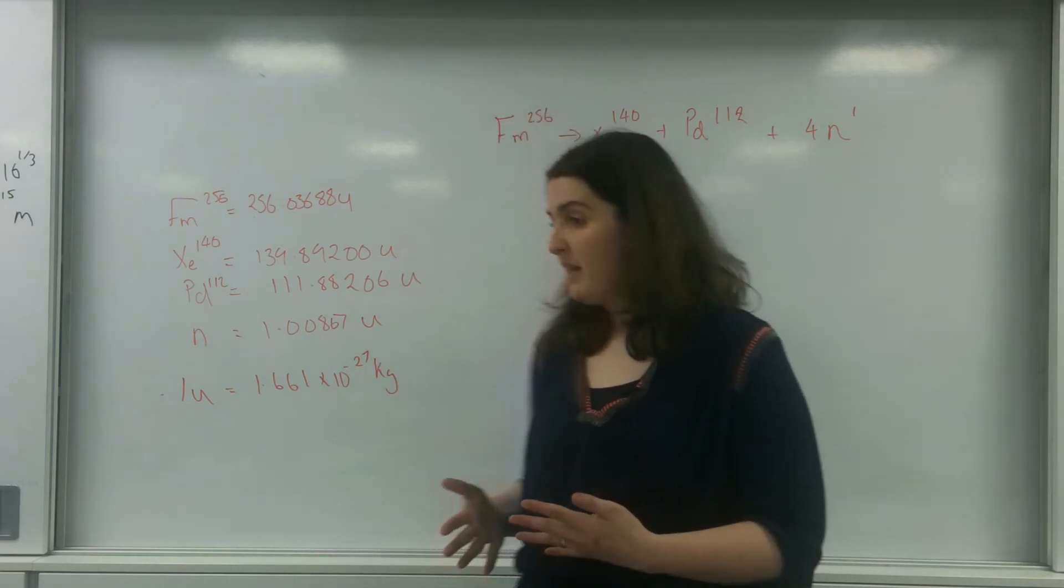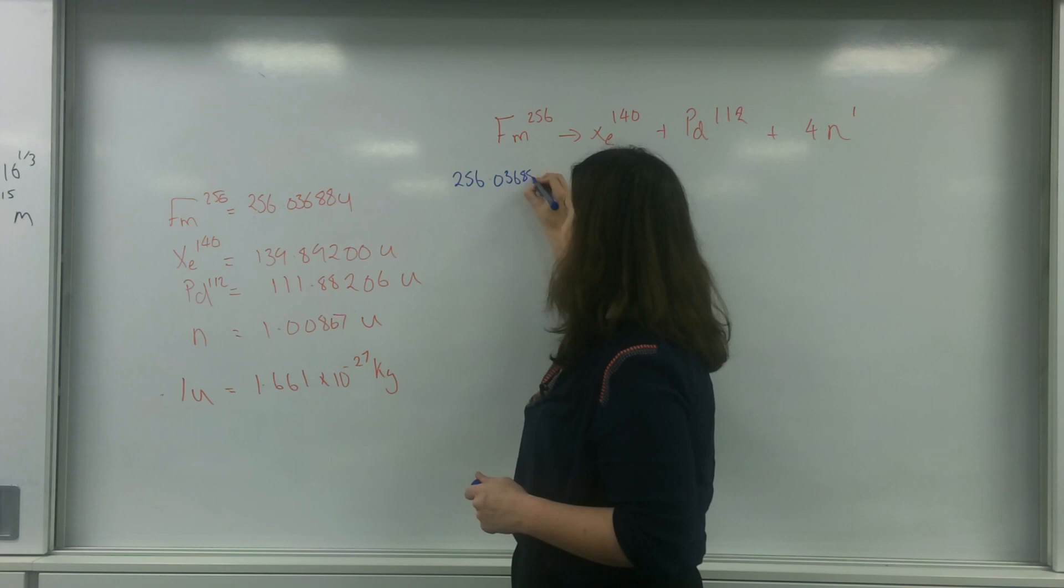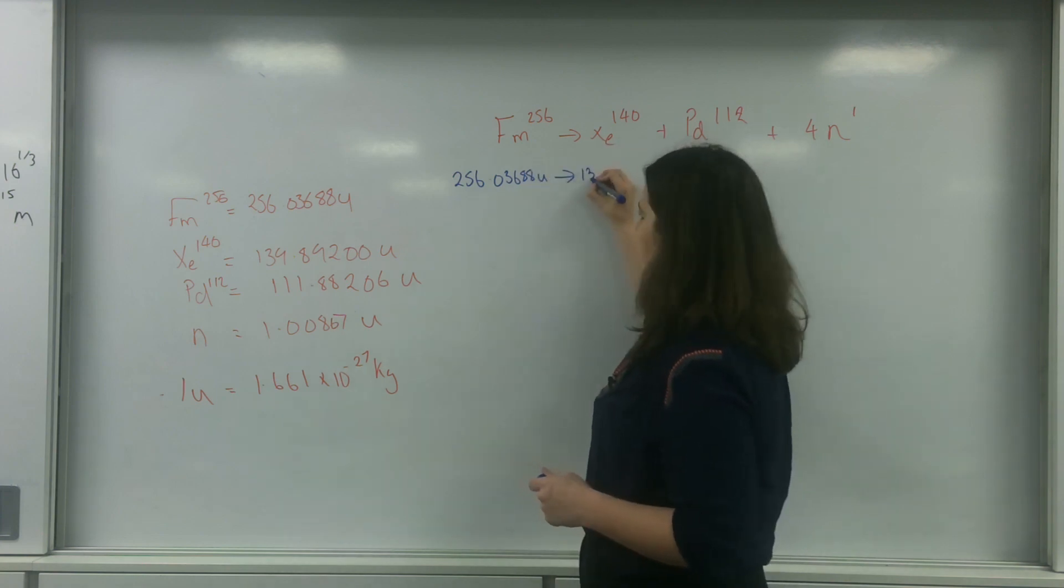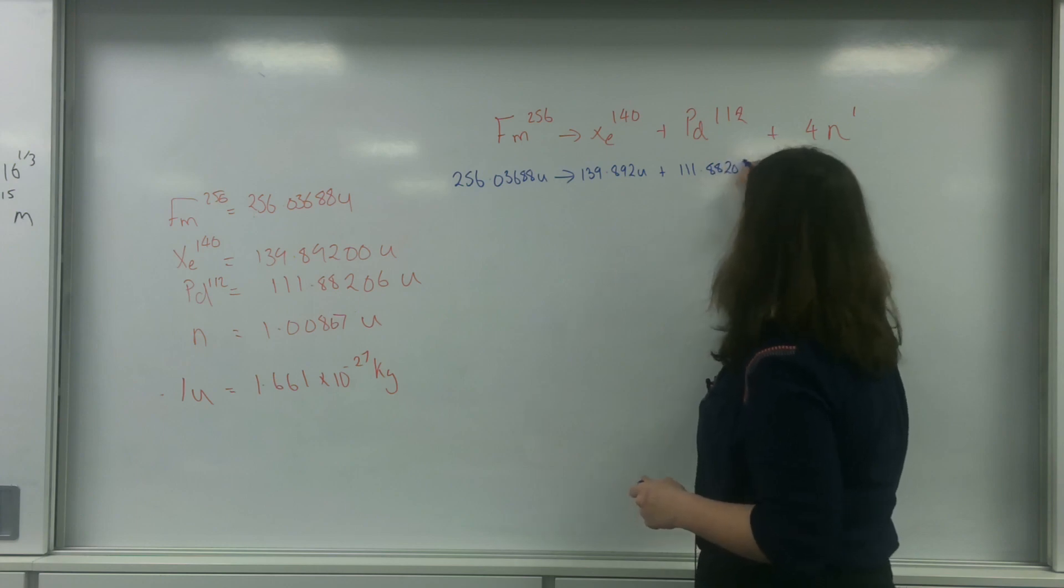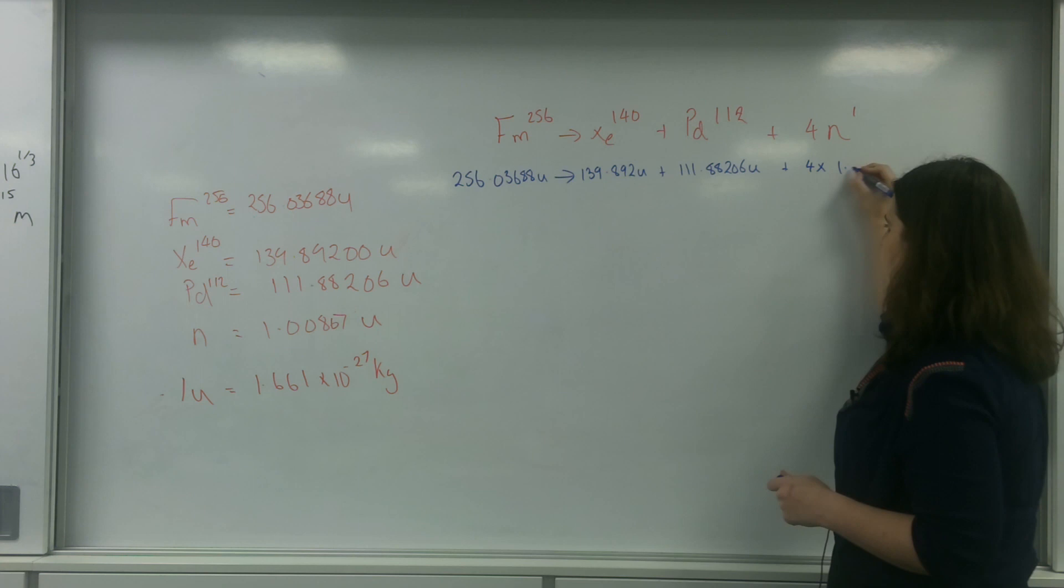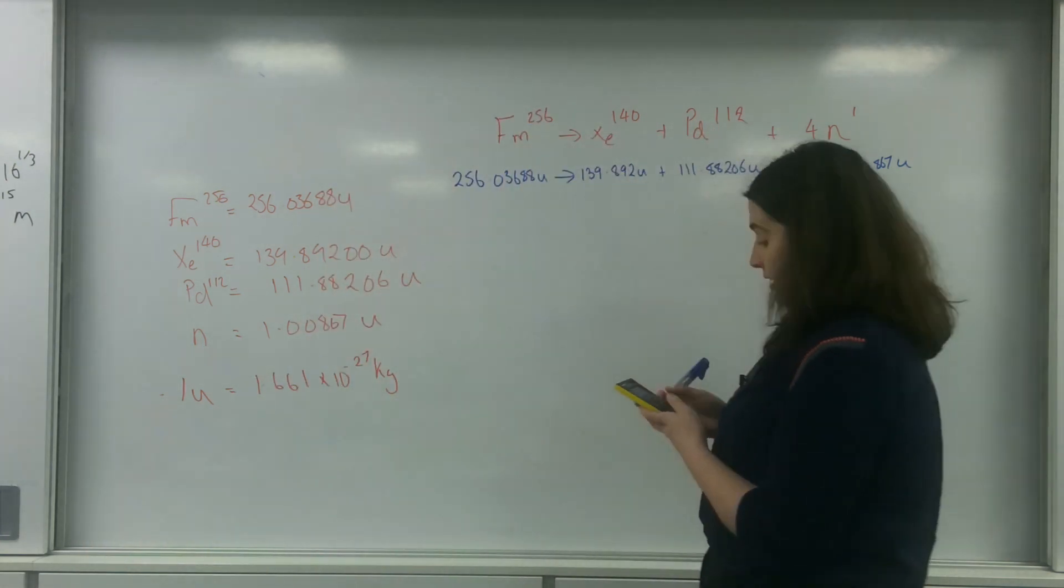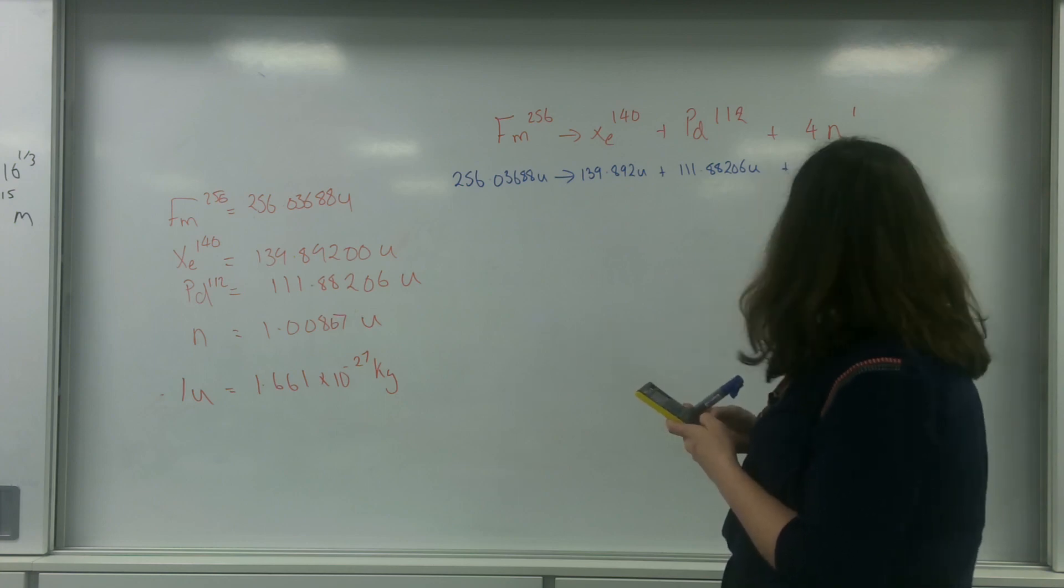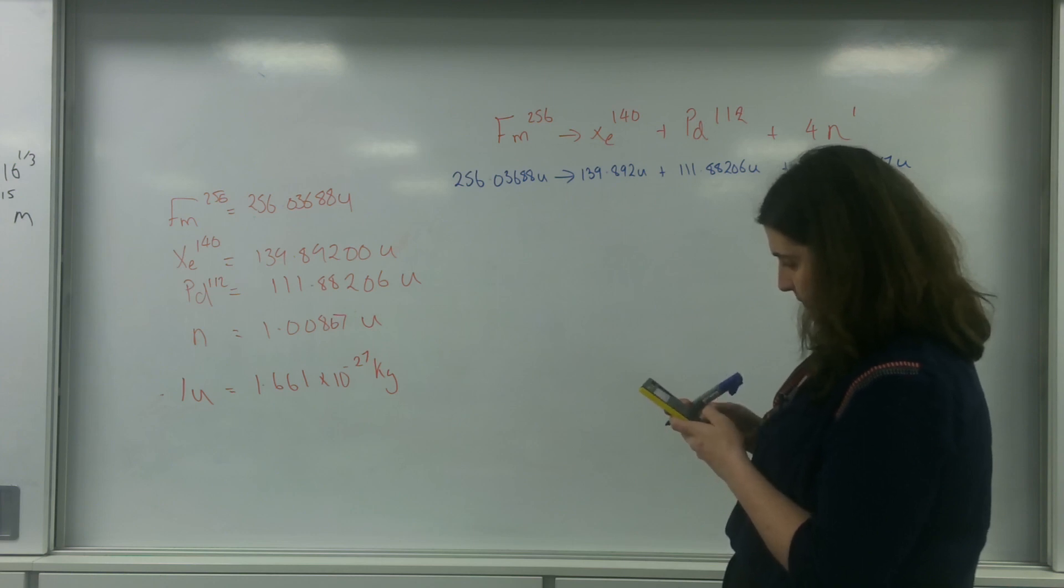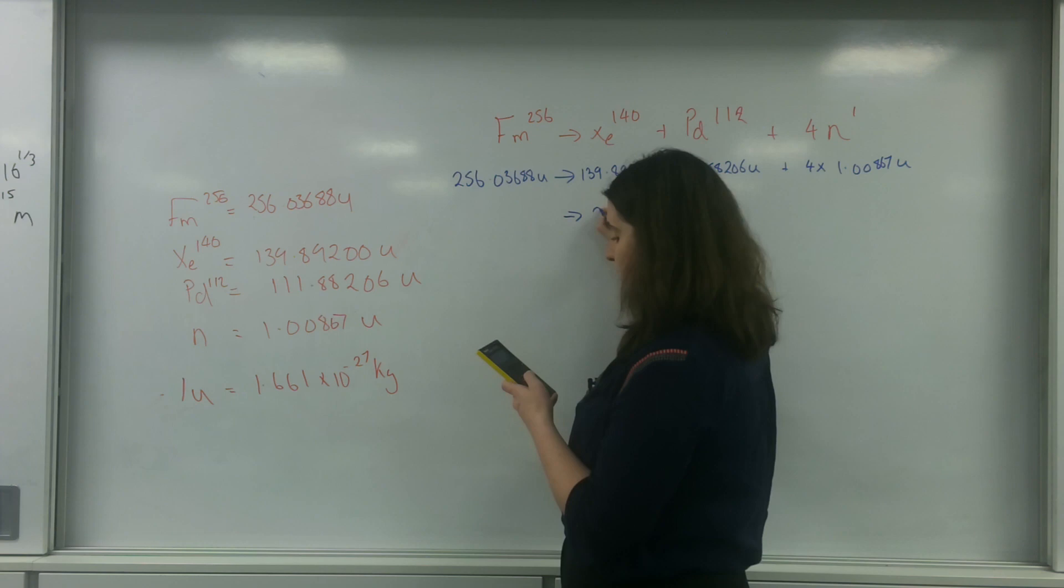What I'm actually going to show you now is I'm going to put this information into the formula, literally writing it directly underneath. So 256.03688 U goes to 139.892 U plus 111.88206 U plus 4 times 1.00867 U. And I end up with this side being 255.81174 U.